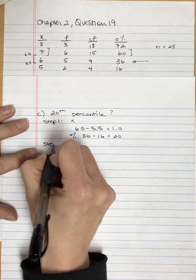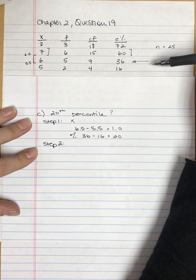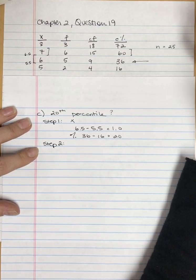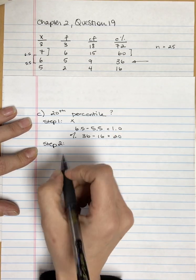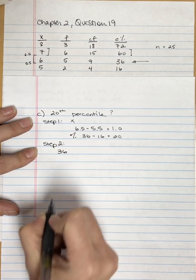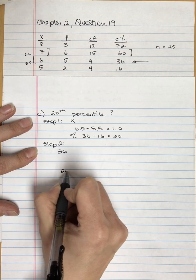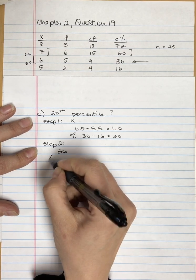Step two: we need to find out how far into this category the 20th percentile is. To do that, we have 36 as the upper and 16 as the lower, and we're wondering where 20 is.